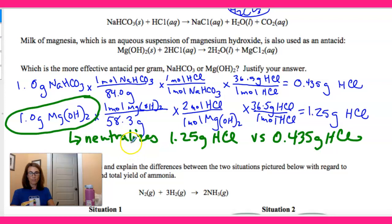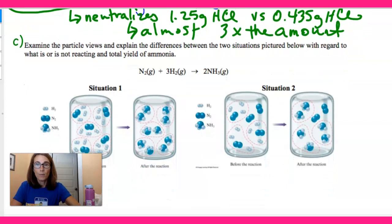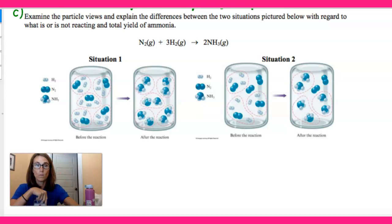To give impact, Mg(OH)₂ neutralizes 1.25 g HCl versus only 0.435 g HCl for NaHCO₃ — almost three times the amount. Use your calculations and your words to explain how your calculations justify your answer — it's important to do both, especially on the AP exam. I really want us getting used to particle representations of reactions because particulate diagrams are used a lot in AP chemistry.